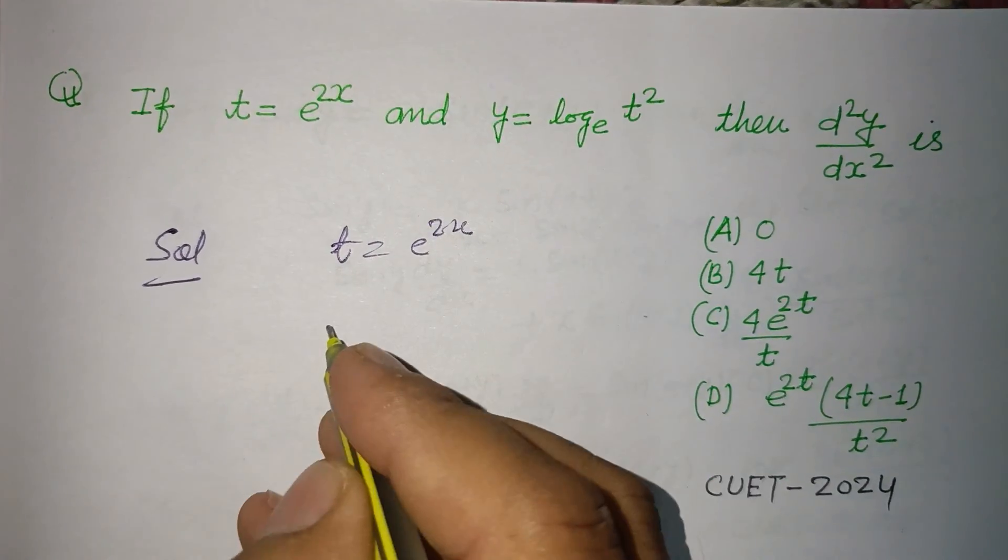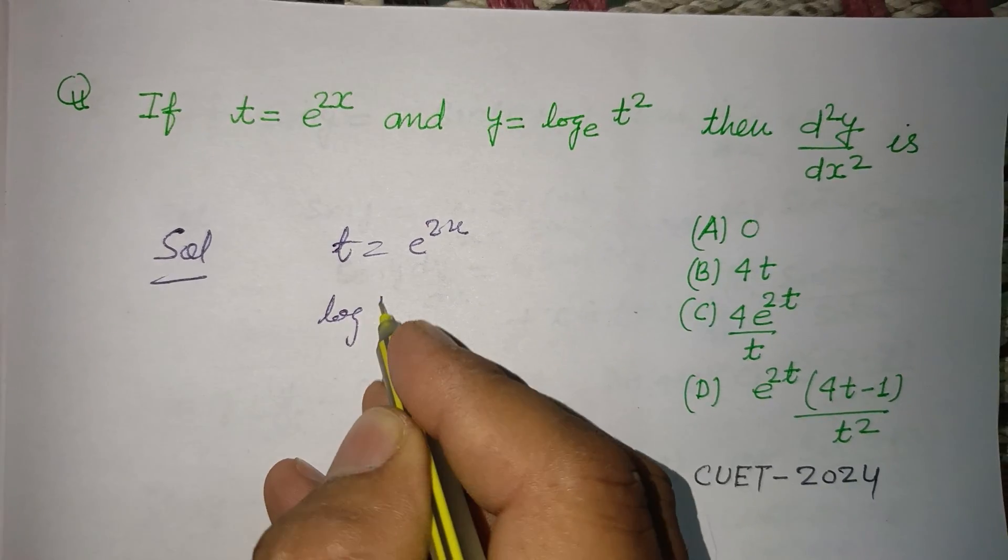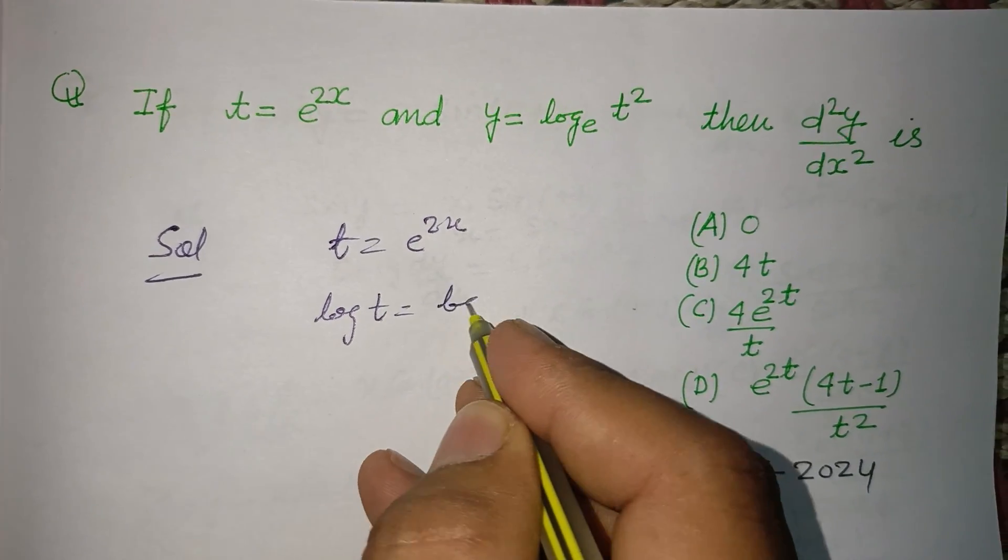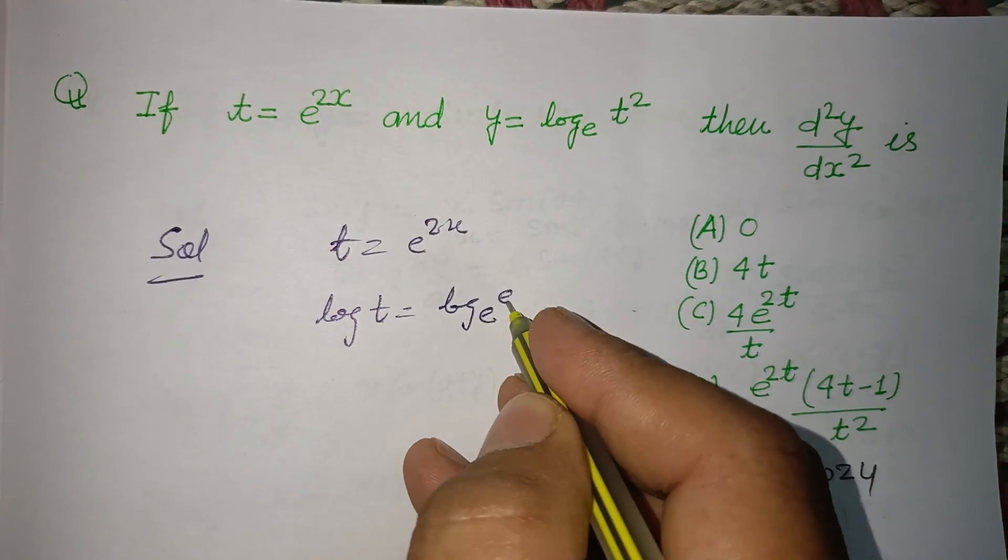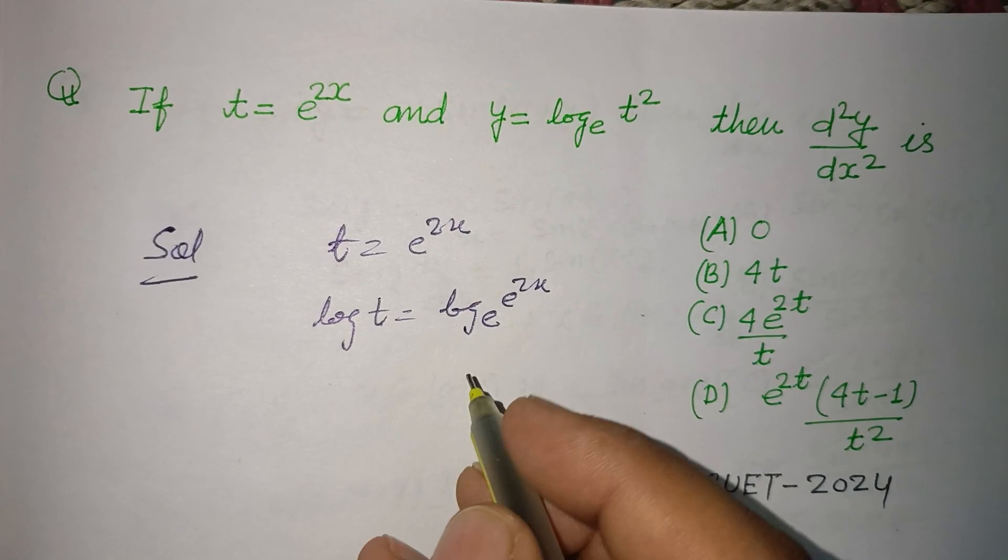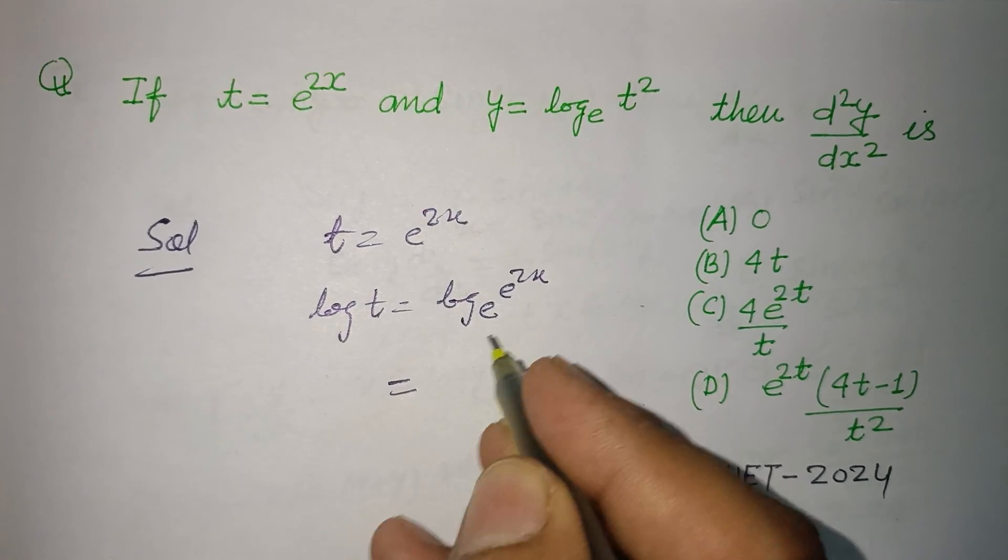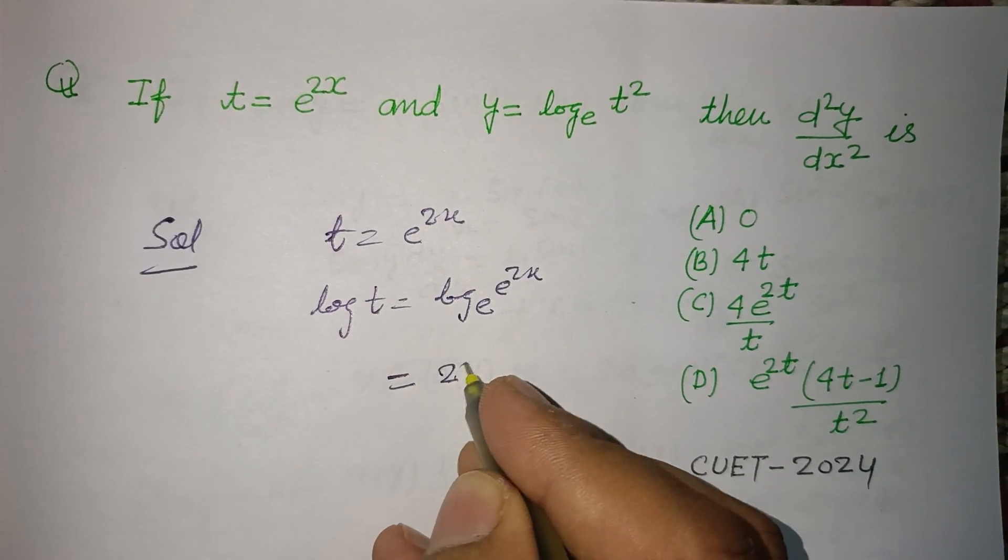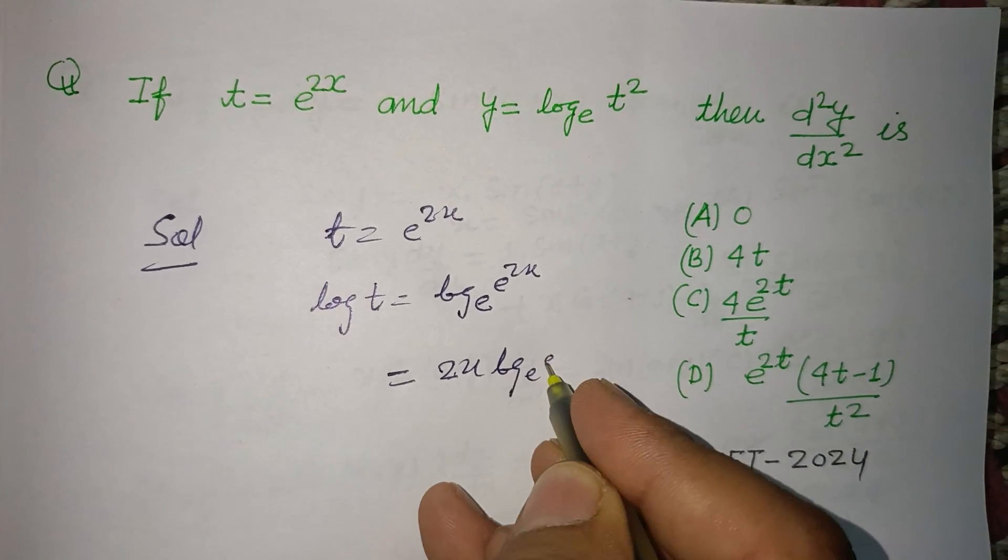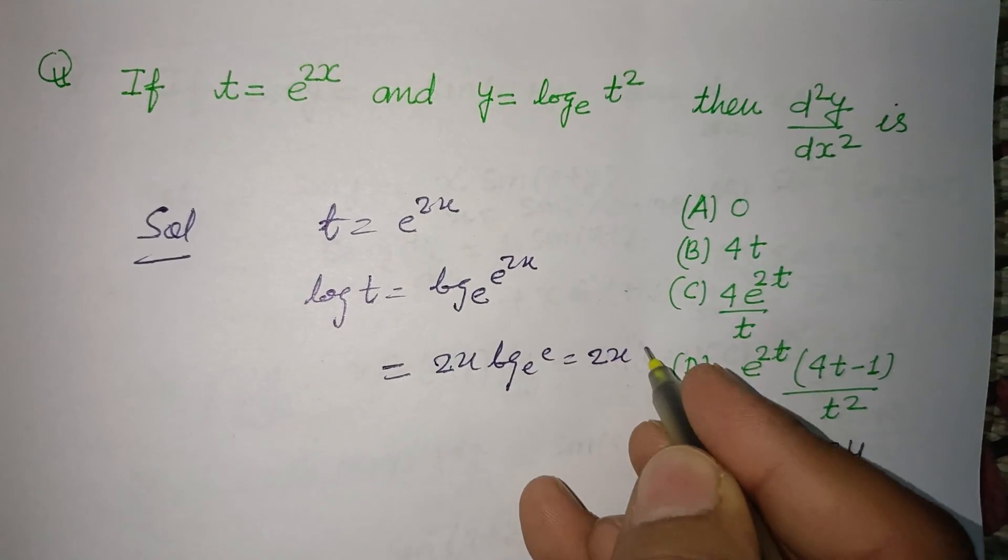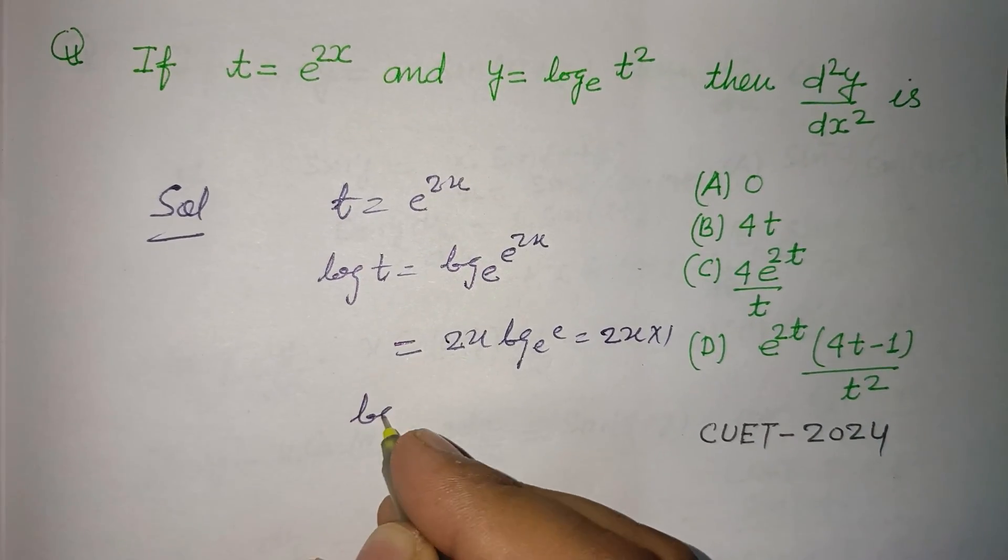to us as e to the power 2x. Taking log both sides, so log t equals log base e of e to the power 2x. So this will be 2x log base e of e, which is 2x times 1.